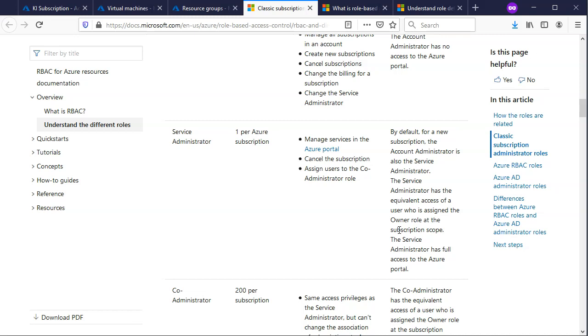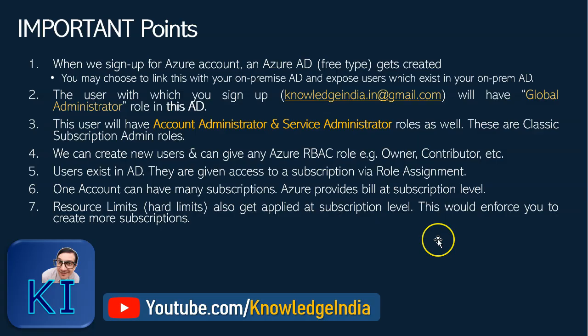I can create any resources in this subscription because I am the Service Administrator, which is quite powerful — it has all rights to create, delete, or modify any resource, and also rights to add other users and give them access to the subscription. It's basically equal to 'Owner', which is part of RBAC roles. To summarize, there are two types of roles: classic subscription administrator roles and Azure RBAC roles. RBAC roles include Owner, Contributor, Reader, and so on — and you can also create custom roles as per your requirement.